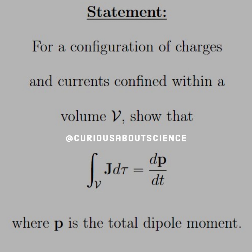So the statement reads: for a configuration of charges and currents confined within a volume, within being a keyword, show that the volume integral of the current density J is equal to the rate of change of the dipole moment p with respect to time, where p is the total dipole moment.